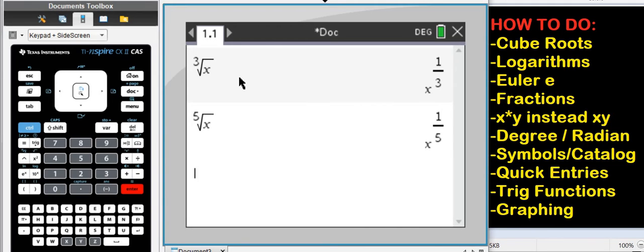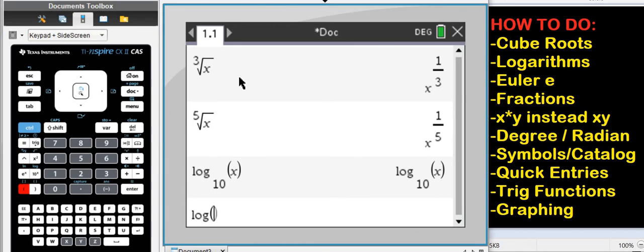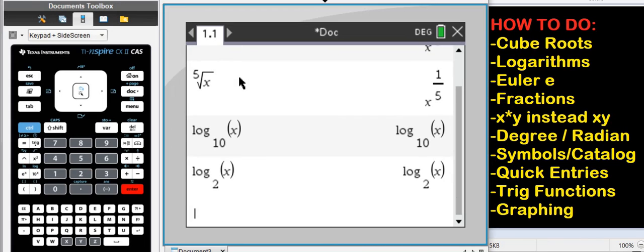Next, logarithms with different bases. If you type in log of X, by default you have log base 10. If you want a different base, such as base 2, just write comma 2 and you have base 2.